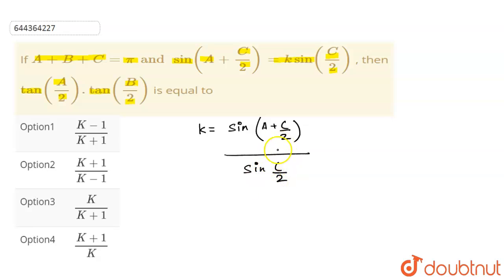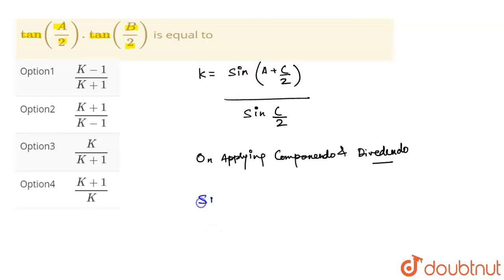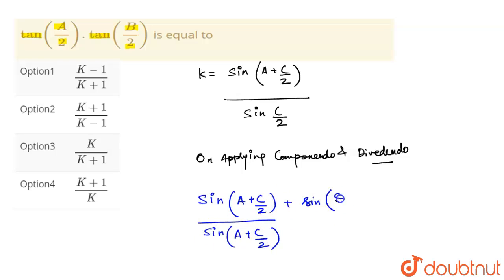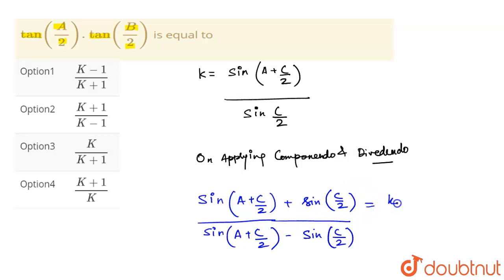I have just transposed it. Now applying componendo and dividendo — you add the denominator to the numerator and subtract the numerator from the denominator. Just see over here: the numerator becomes k plus 1, and the denominator becomes k minus 1.